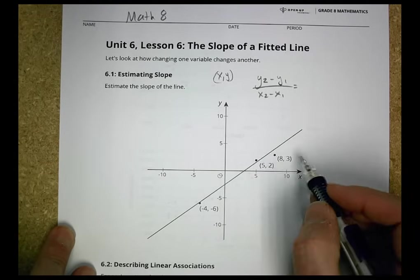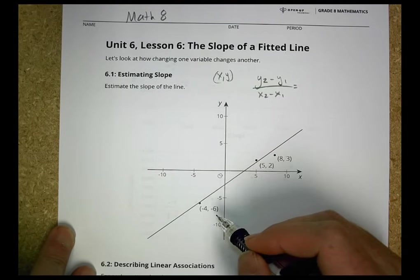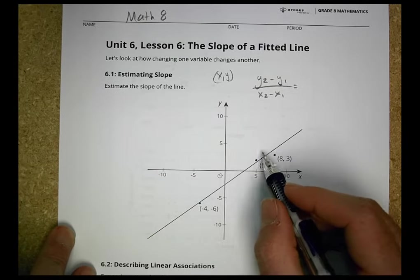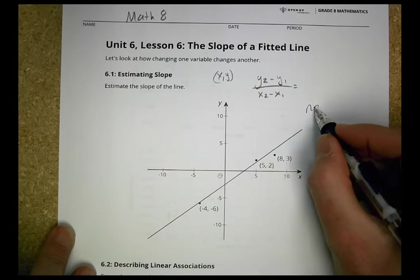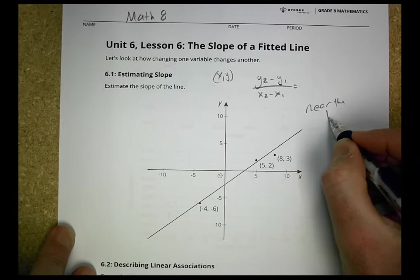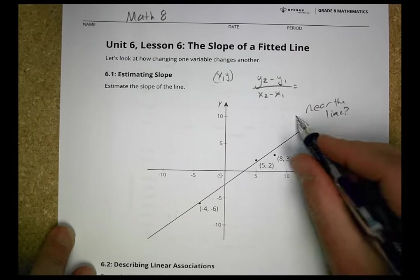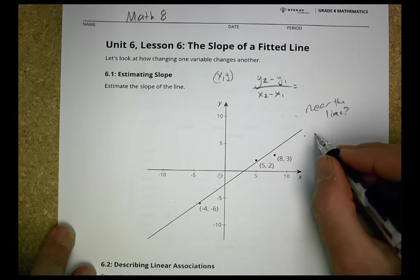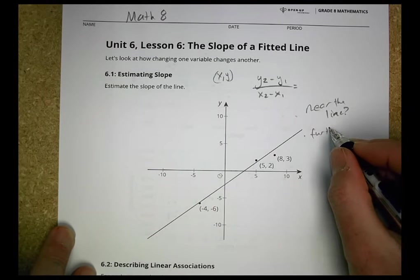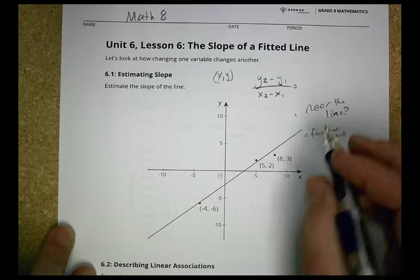Now in this case, you have three points to choose from. It's best to get points that are near the line. Okay, so which ones are near the line? That helps to know. And then points that are kind of further apart.